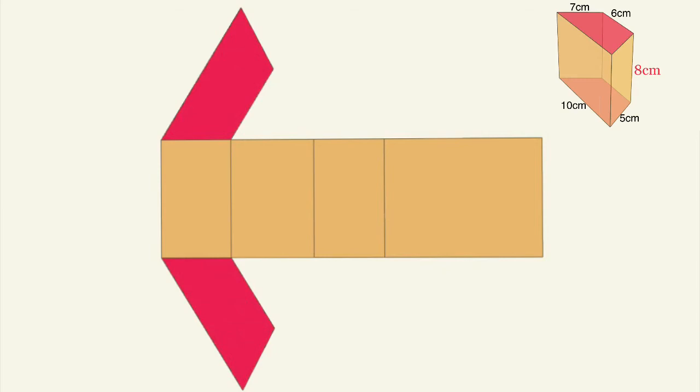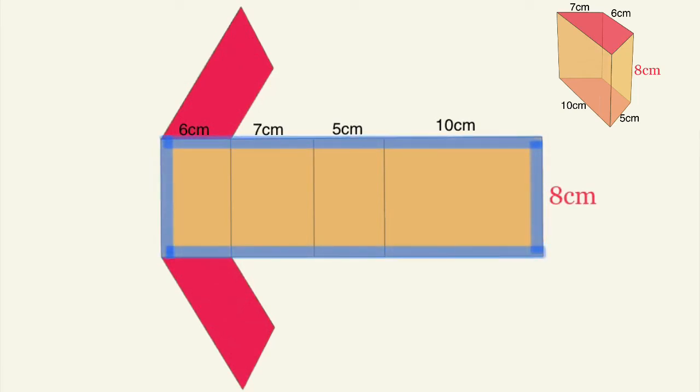Now normally we won't do this with the net. We'll do it just by looking at the picture but I'm going to use the net to show you why this works. So again that middle lateral rectangle, all those rectangular faces has two dimensions.